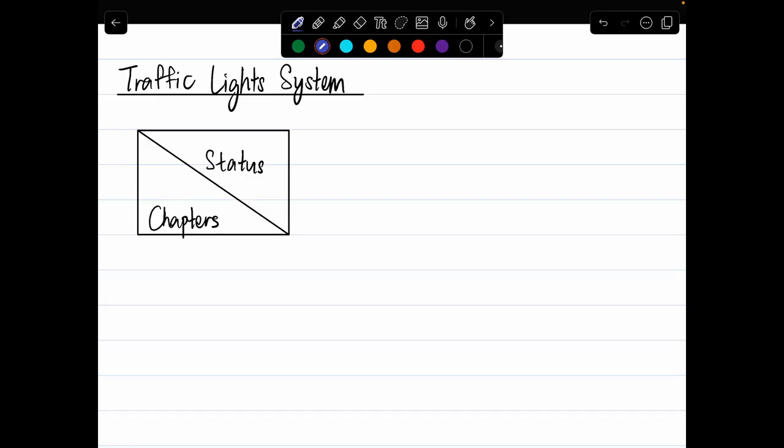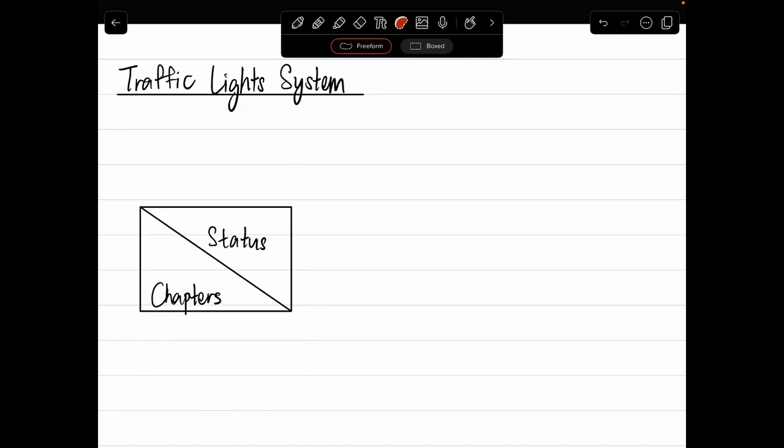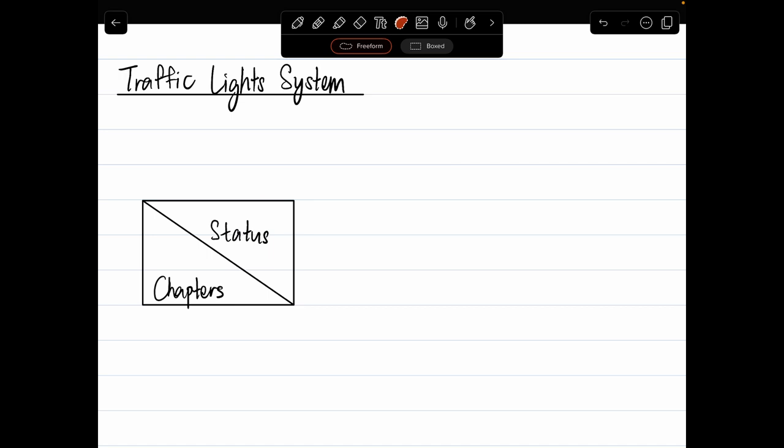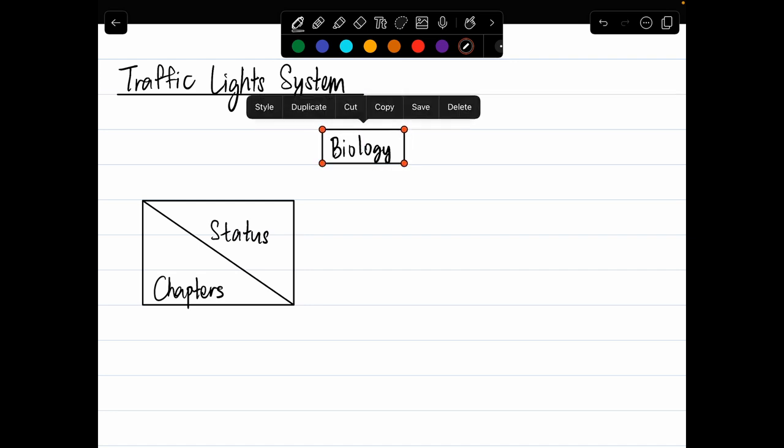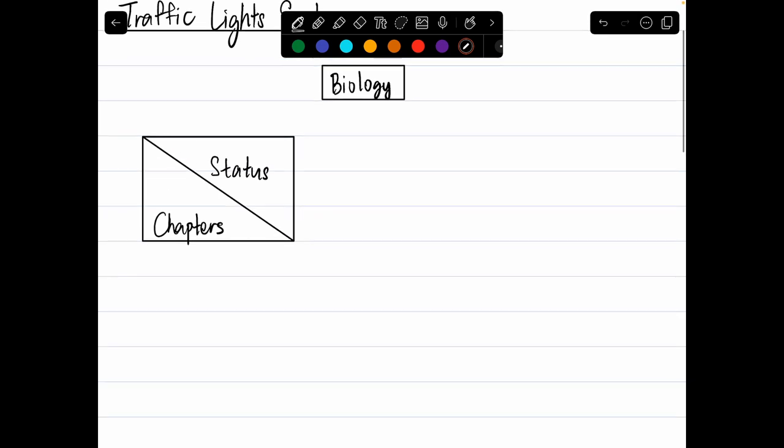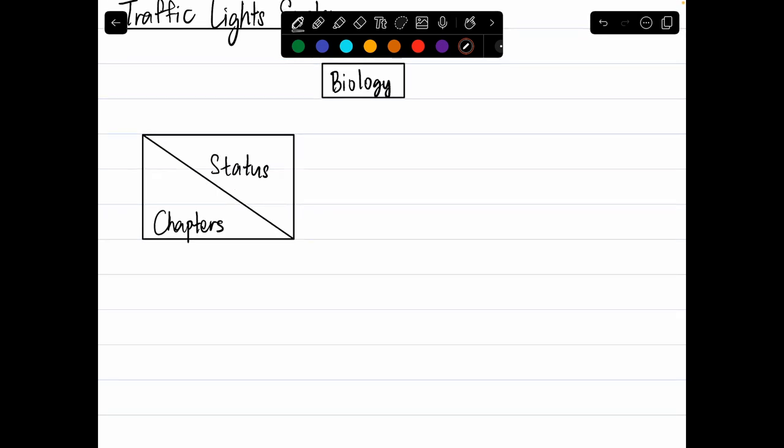Conceptually, the Traffic Light System is pretty simple. What you do is first of all, choose a subject that you're going to use this system for. For instance, you choose biology. If you're wondering why biology, because I like it. Yeah, I know that's a lame answer, but still, let's move on with biology.